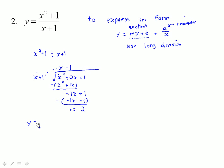So the form of this equation could be written as the quotient, which is x minus 1, plus the remainder of 2 over top of what you were dividing by, which is x plus 1, over top of the divisor. And that means the slant asymptote is y equals x minus 1.